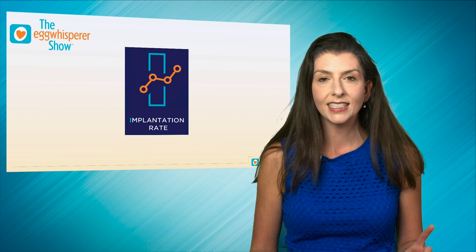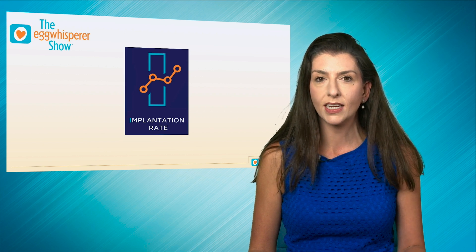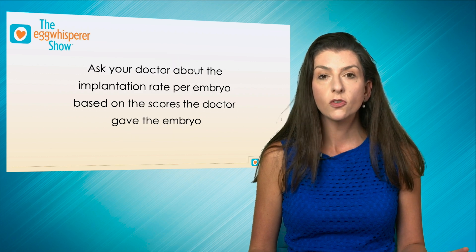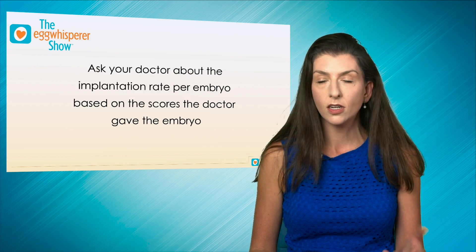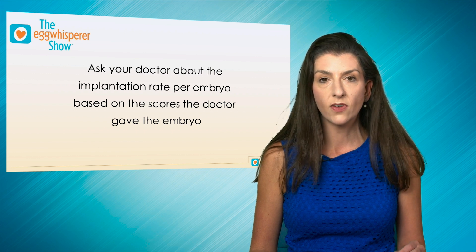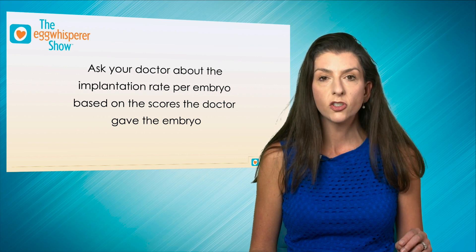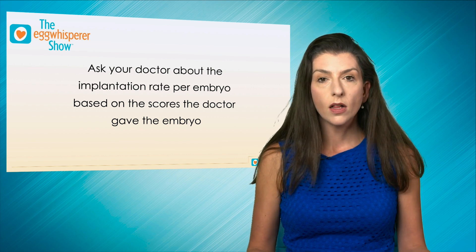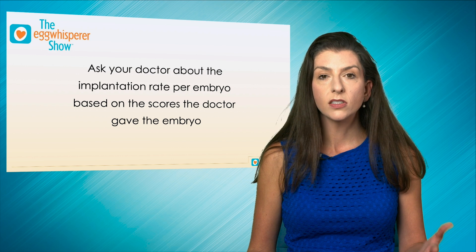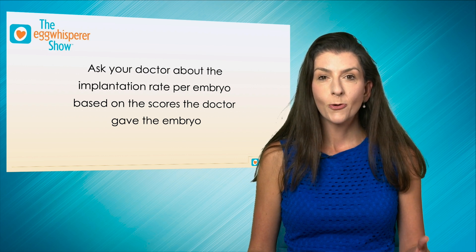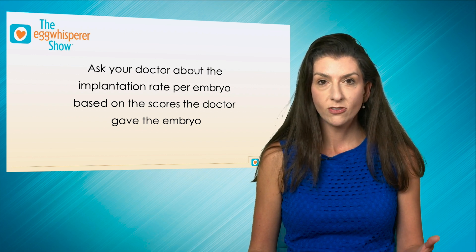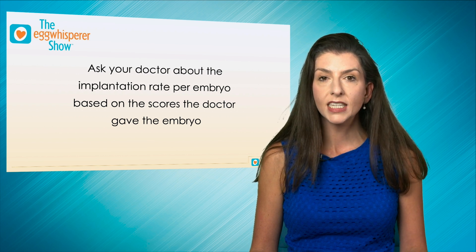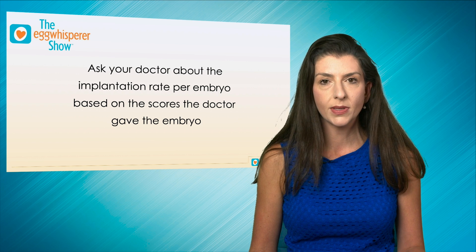The I in Diamonds is Implantation Rate. Just like diamonds, embryos get scores, and you need to know those scores. Every lab is a little bit different, but those scores given by your doctor will help determine the implantation rate per embryo. Not all embryos are the same, just like not all diamonds are the same. In order to know the success rate per embryo and whether you have enough embryos for the family size you want, you really need to know the scores and the implantation rate.